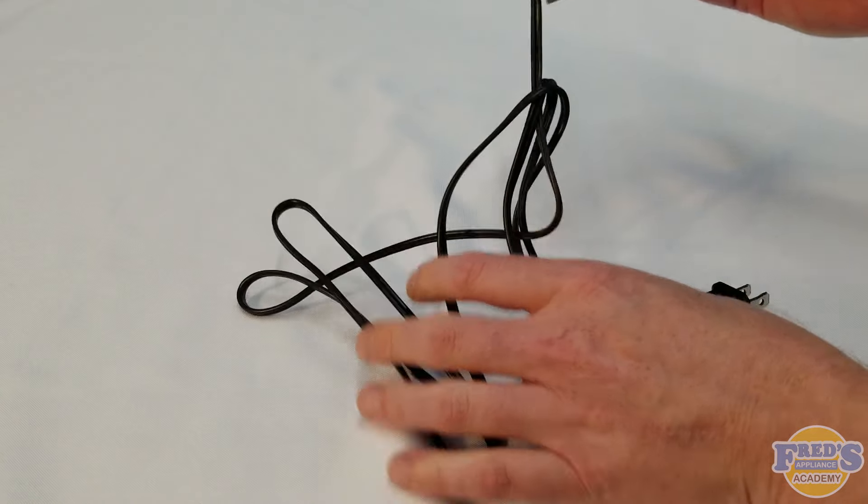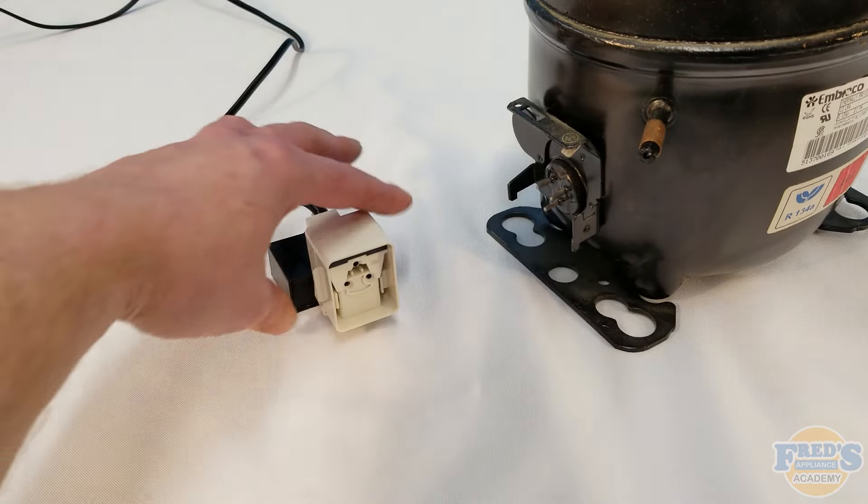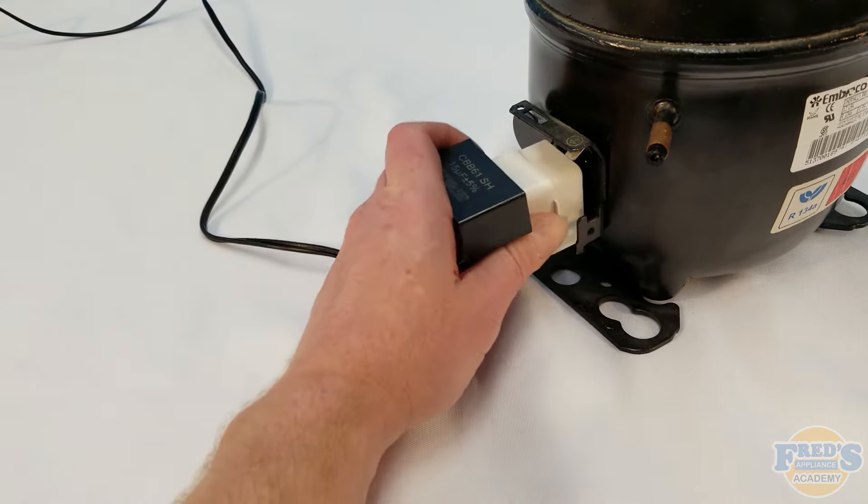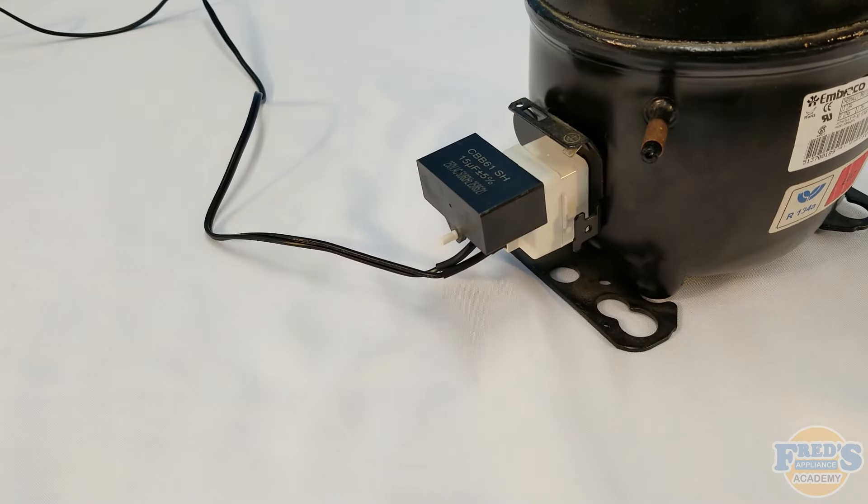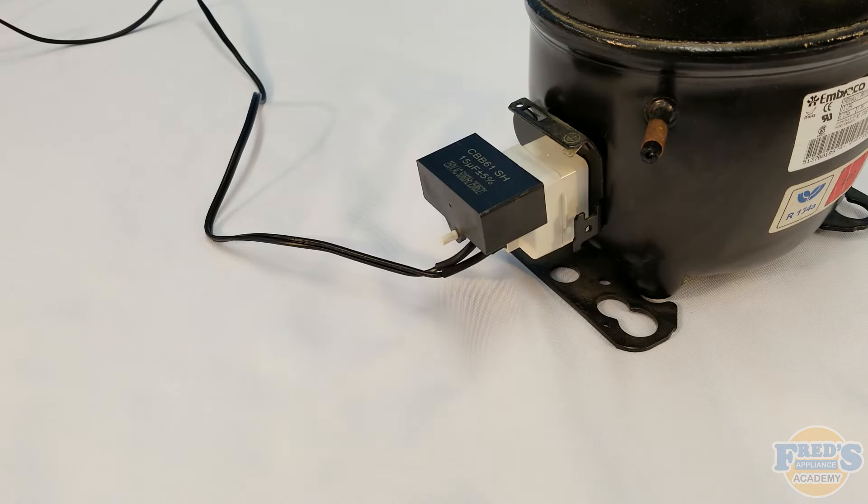Once the terminals have been connected to your PTC start device, it's ready to use. Simply plug onto the compressor in question and plug the start device into the wall. If the compressor runs, either the compressor previously was not getting power or had a faulty start device. If the compressor does not run, the compressor is faulty and will need to be replaced.